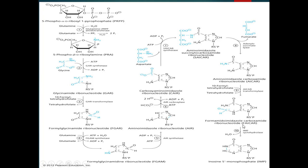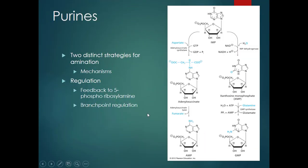After the formation of FAICAR, it is converted into inosine monophosphate, or IMP, which is the precursor in this whole process. The enzyme in this process is IMP cyclohydrolase, with the release of water molecules. After inosine monophosphate is formed, there are two strategies for further biosynthesis of purines: IMP can be converted into GMP, as you can see in this figure, or IMP can be converted into AMP.